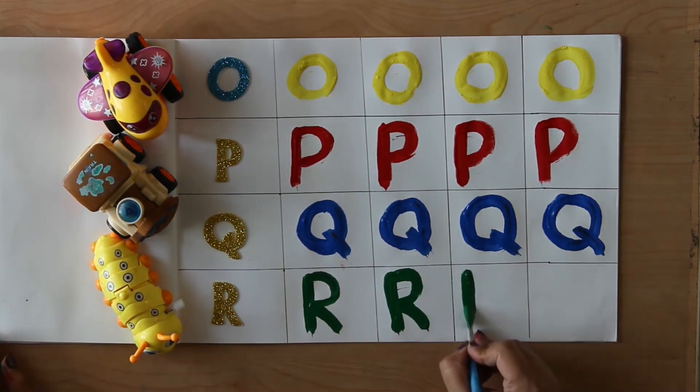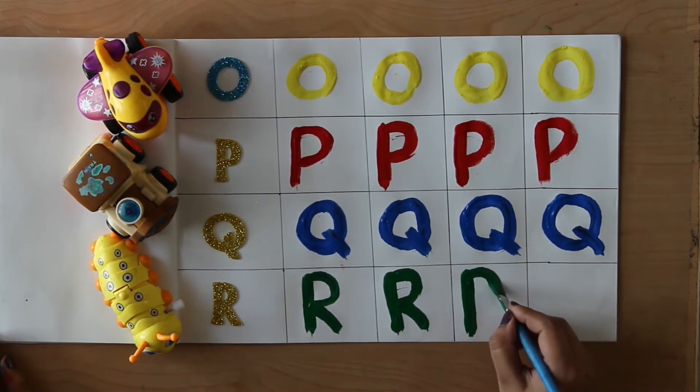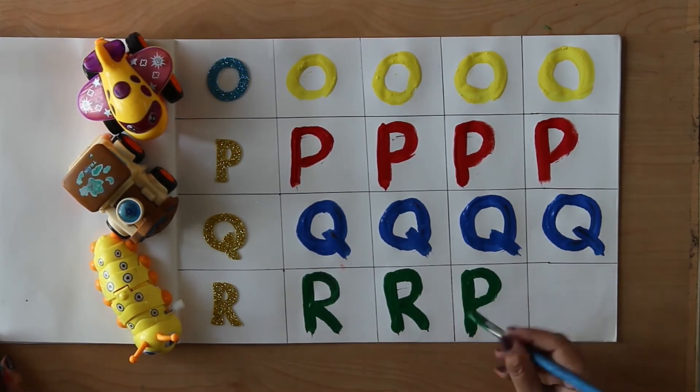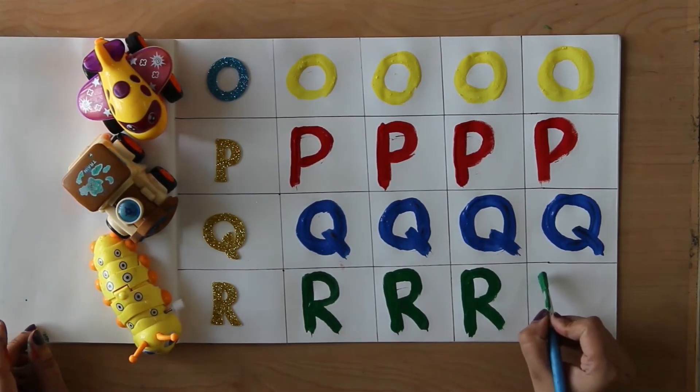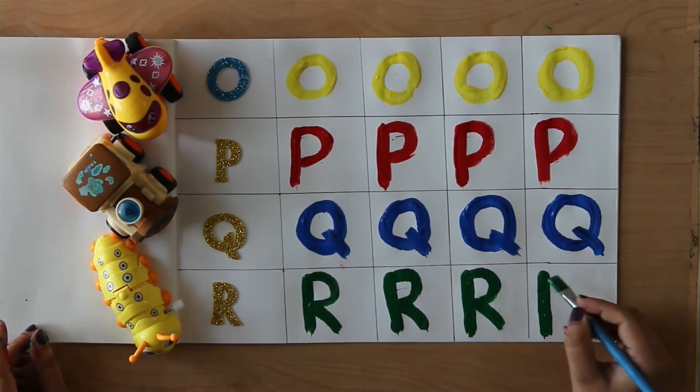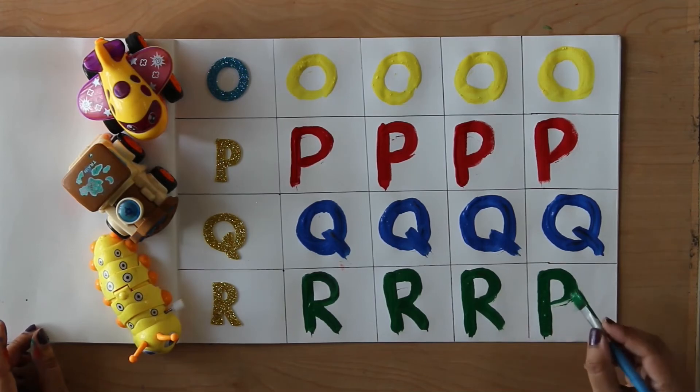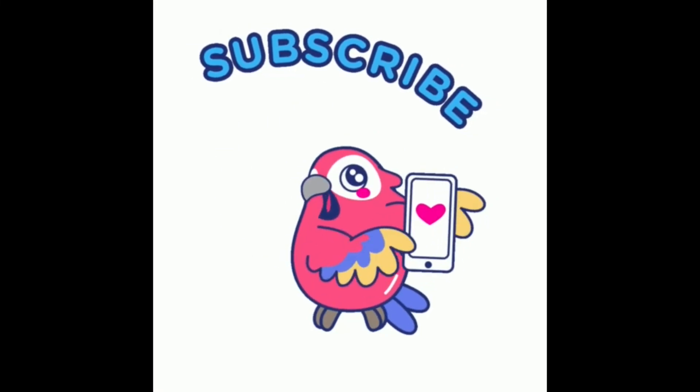R. R for rope. Rope means Rassi. R. R for rain. Rain means Barish.